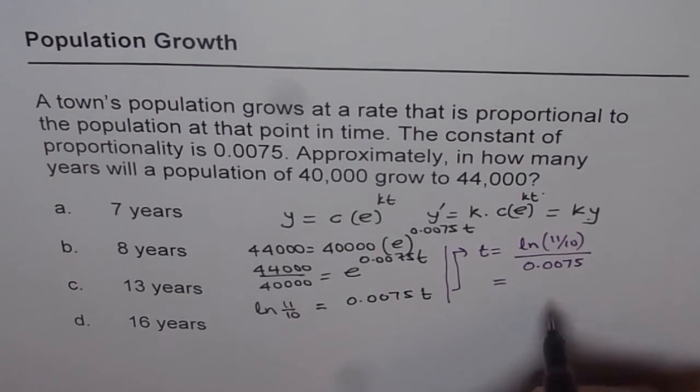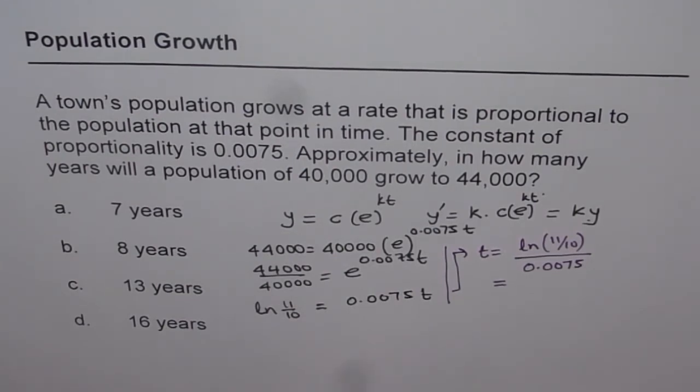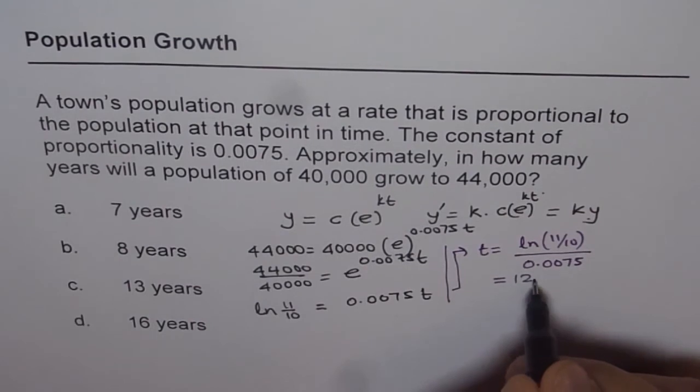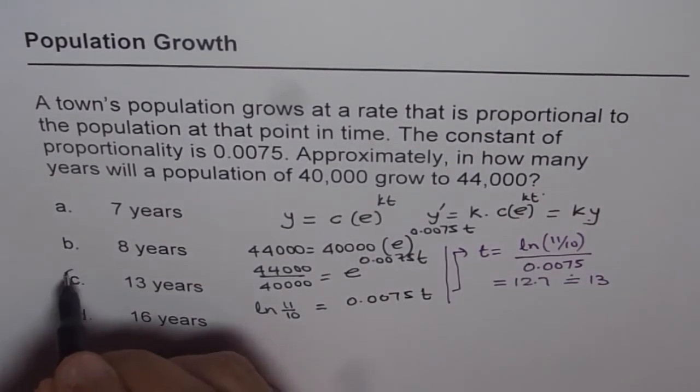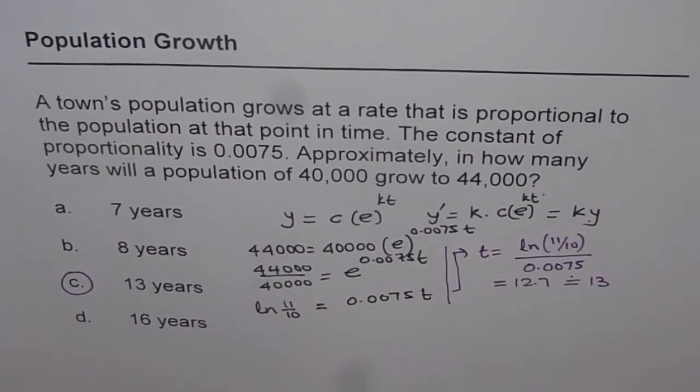And let's use calculator to find this answer. So when you do ln of 11 over 10 divided by 0.0075, what do you get? You get approximately 12.7. So this is approximated to 13. And therefore, our answer is c, which is 13 years.